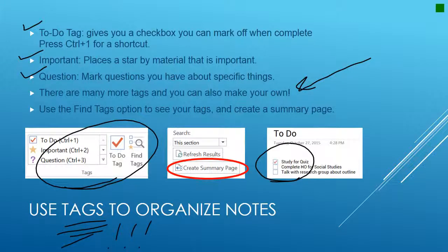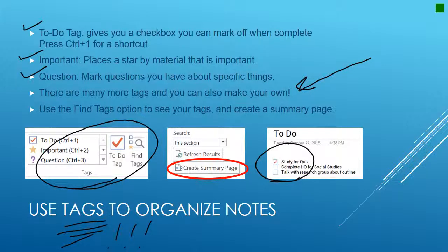Tags — I cannot stress enough how amazing tags are. Using tags allows you to organize your notes in OneNote and find them very simply and easily later. There are basic tags built in — up in the home toolbar under Tags. You can do a to-do tag, which gives you a checkbox you can mark off when complete. You can do an important tag, which puts a star by that material. You can do a question tag that marks questions you may have. You can also make your own custom tags for your different classes. Once you've tagged things, you can use the Find Tags option to see all your tags and create a summary page.